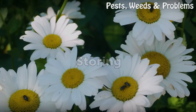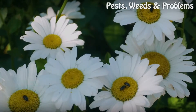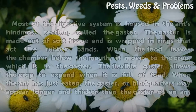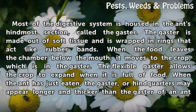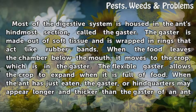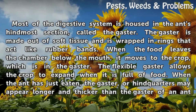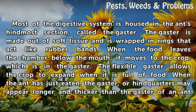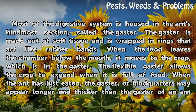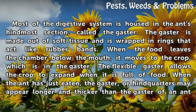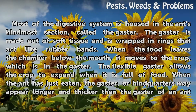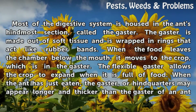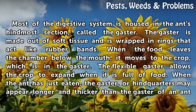Storing: Most of the digestive system is housed in the ant's hindmost section, called the gaster. The gaster is made out of soft tissue and is wrapped in rings that act like rubber bands. When the food leaves the chamber below the mouth, it moves to the crop, which is in the gaster.